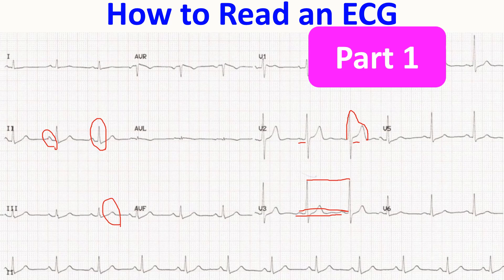The P wave is due to atrial depolarization. QRS is due to ventricular depolarization, and the T wave is due to ventricular repolarization. Then why are both QRS and T wave in the same direction? That is because the direction of repolarization is opposite to the direction of depolarization, which is why both end up in the same direction.